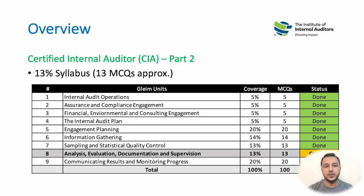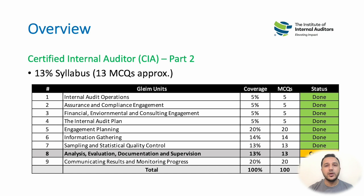Looking at the syllabus, from Unit 4 — the internal audit plan — through Unit 9, this is the audit cycle. We carry out the annual audit plan, then engagement planning, gather information, perform sampling and statistical analysis, review documentation, and lastly communicate, which is covered in Unit 9 when we issue the audit report.